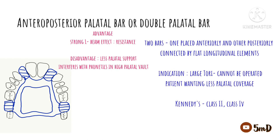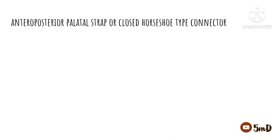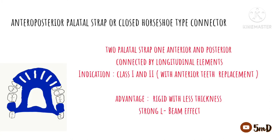The double palatal bar also has the advantage of a strong L-beam effect. However, the disadvantage is that due to lesser palatal support, the periodontal support of the remaining teeth has to be utilized for the support needed for the denture. When the palate is narrow or has a high vault, we cannot use it because the anterior bar interferes with phonetics due to tongue position.